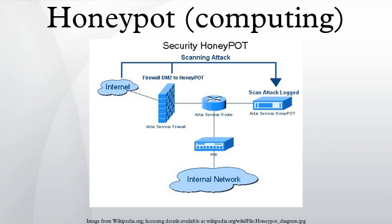Detection: just as honeypots are weapons against spammers, honeypot detection systems are spammer-employed counter-weapons. As detection systems would likely use unique characteristics of specific honeypots to identify them, a great deal of honeypots in use makes the set of unique characteristics larger and more daunting to those seeking to detect and identify them. Fred Cohen, the inventor of the Deception Toolkit, argues that every system running his honeypot should have a deception port that adversaries can use to detect the honeypot, believing this might deter adversaries.